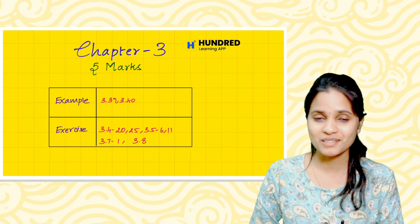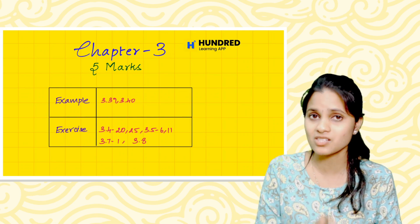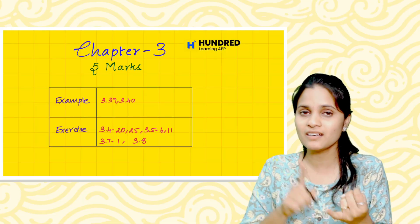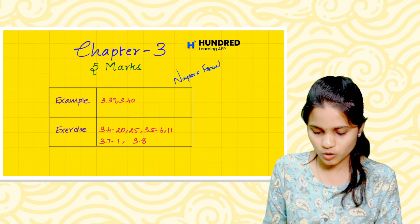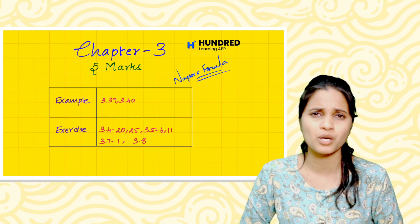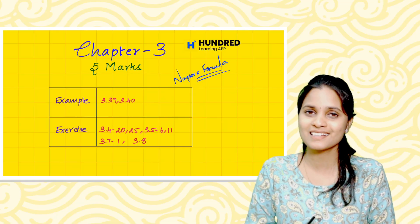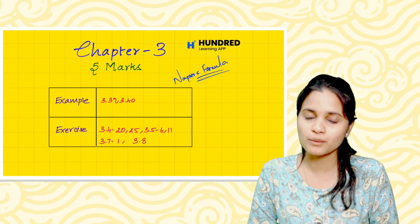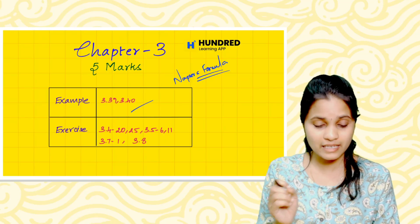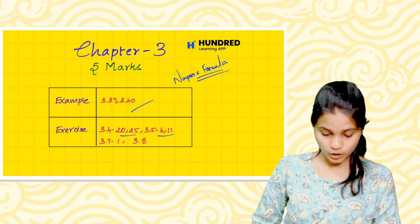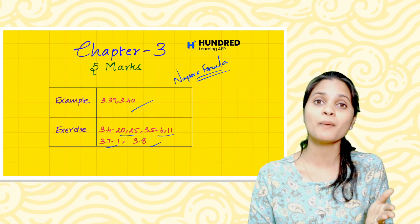Chapter 3 has many questions. We will ask a selected few. There is the NAPIAS formula — that is a theorem. We will cover the NAPIAS formula in volume 1. For volume 2, there are 2–3 theorems of different types which we will see in the classes. The NAPIAS formula is very important. For example, 3.39 and 3.40. Also, chapter items 20, 25, exercise 3.5, questions 6 and 11. After 3.7, first one, and 3.8 — review these fully.